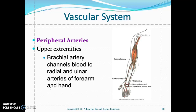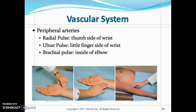For the peripheral veins, assess the brachial artery and the radial and ulnar arteries of the forearm for pulses. Make sure you compare and contrast the pulses on both sides. The radial pulse is on the thumb side, the ulnar pulse is on the pinky finger side, and the brachial pulse is on the inside of the antecubital space.